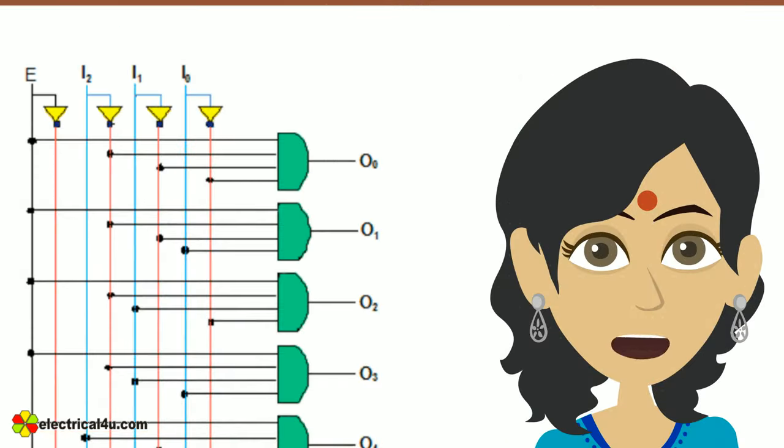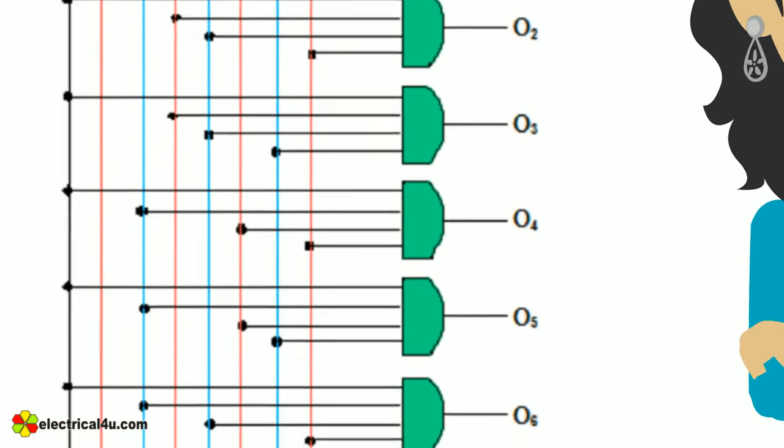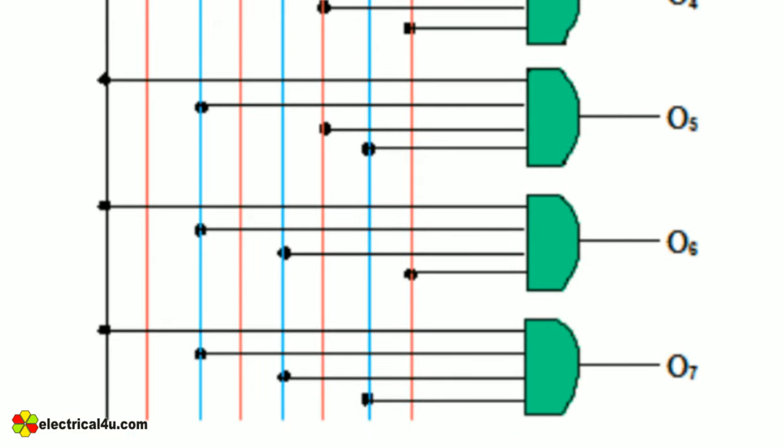Equations 1 to 8 show that the 3 to 8 decoder can be designed using AND and NOT gates as shown by this figure. This is due to the fact that the output lines are nothing but the logical AND of either input shown by blue lines or its negation shown by red lines with the enable signal shown by black line.